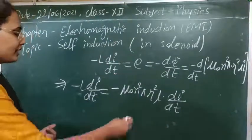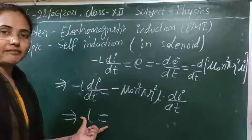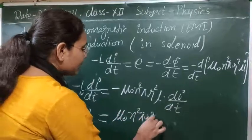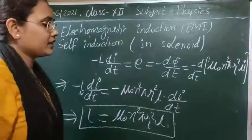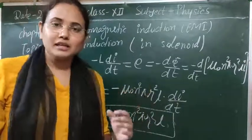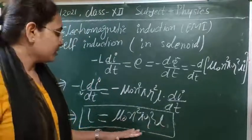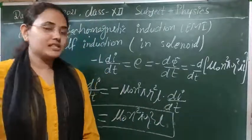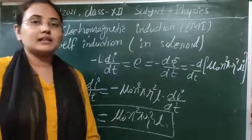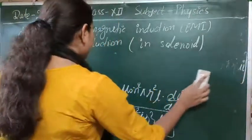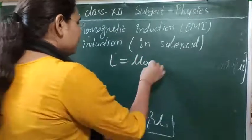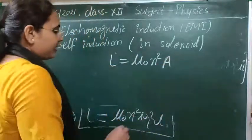Comparing the two equations, the self-inductance L of the solenoid is L = μ₀n²πr²l, or replacing πr² with A: L = μ₀n²Al. Equivalently, since n = N/l, this becomes L = μ₀N²A/l. This is the formula to calculate the self-inductance of a solenoid.